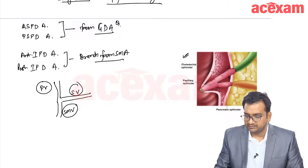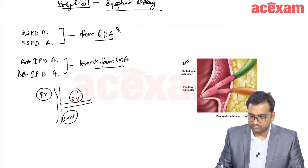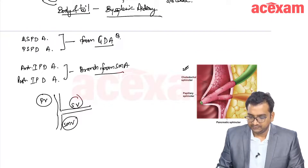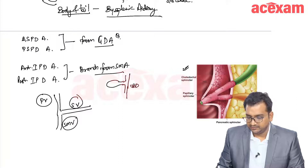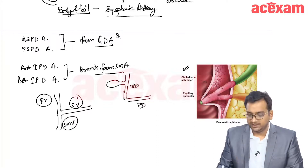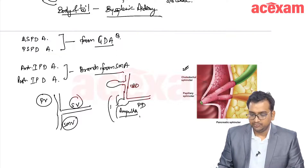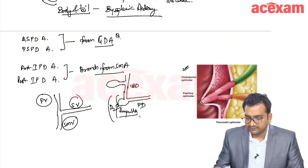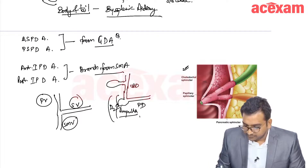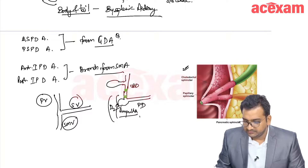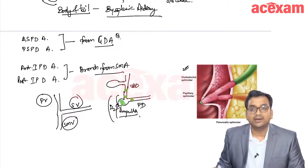The sphincter complex is visible here. The CBD and pancreatic duct join together and then dilate to form the ampulla, also known as the ampulla of Vater, which opens through a papilla into the duodenum at D2. In this sphincter of Oddi complex, there is a superior choledochal sphincter, an inferior choledochal sphincter in the CBD, a sphincter pancreaticus in the pancreatic duct, and a sphincter ampullae at the level of the ampulla.